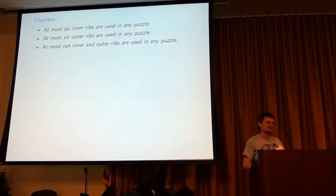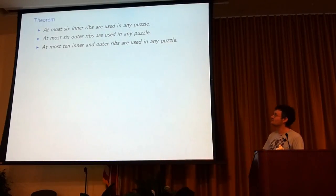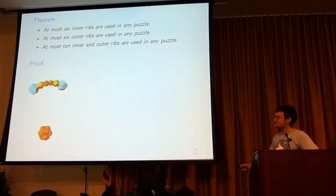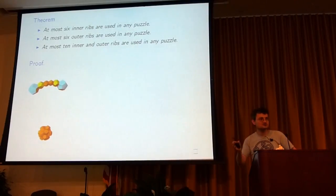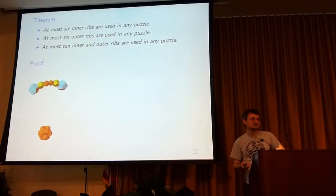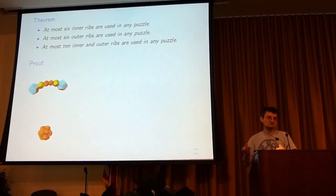So it's always good to have a theorem in the talk. Here's the theorem. At most six inner ribs are used in any puzzle. At most six outer ribs are used in any puzzle. At most ten inner and outer ribs are used in any puzzle. And here's the proof. This is an inner six, or if you remove the cyan dodecahedra, this is an inner four. And this was the second layer of dodecahedra out from the central dodecahedron. And there are twelve of these here. And each inner rib has two orange dodecahedra, so you can use at most six of them. You can't fit more than that in, because each one of them picks up two of these dodecahedra.